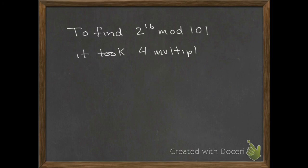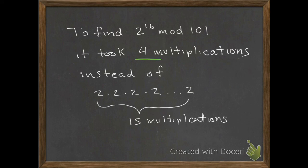To find 2^16 mod 101, it took just four multiplications instead of 15. That's quite a savings. Thank you for listening.